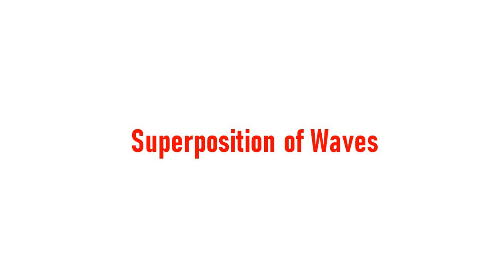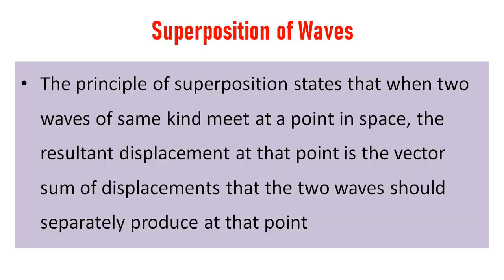Superposition of waves. The principle of superposition states that when two waves of the same kind meet at a point in space, the resultant displacement at that point is the vector sum of displacements that the two waves would separately produce at that point.